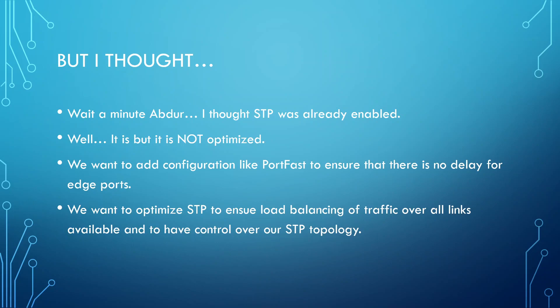We also want to configure a feature called portfast. By default, any port when it goes from blocking into forwarding will take 30 seconds. We need to be cautious when we have links to other switches. However, when we have links to end-user devices, it seems silly because a loop cannot occur. Spanning Tree portfast allows a port to transition from the blocking state into the forwarding state instantly, as long as that switch doesn't receive BPDUs on that port. By optimizing STP, we can make better use of our redundant links, having a separate STP topology per VLAN so that traffic for some VLANs flows over one link and traffic for other VLANs flows over the other.